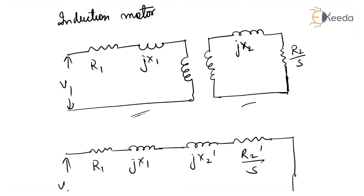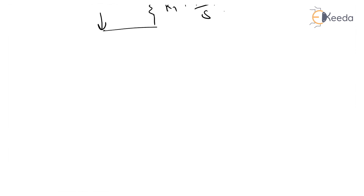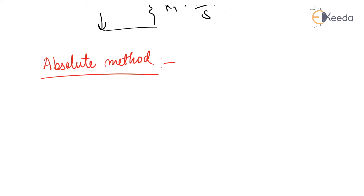So this is how we represent our actual circuit. Representation of power is done by two methods. The first is the absolute system, and the second is the per unit system. We represent components in these two systems.